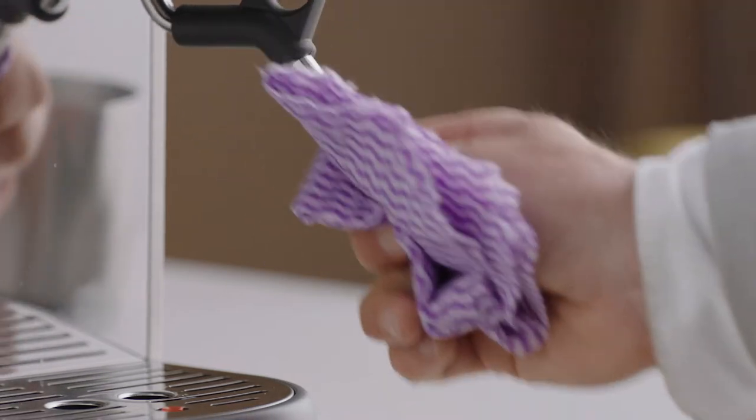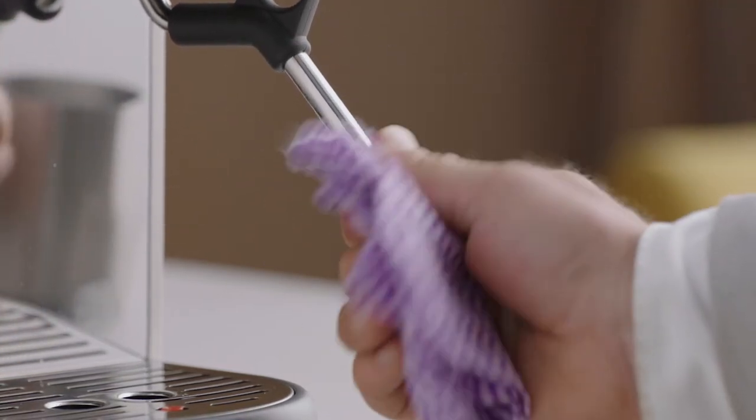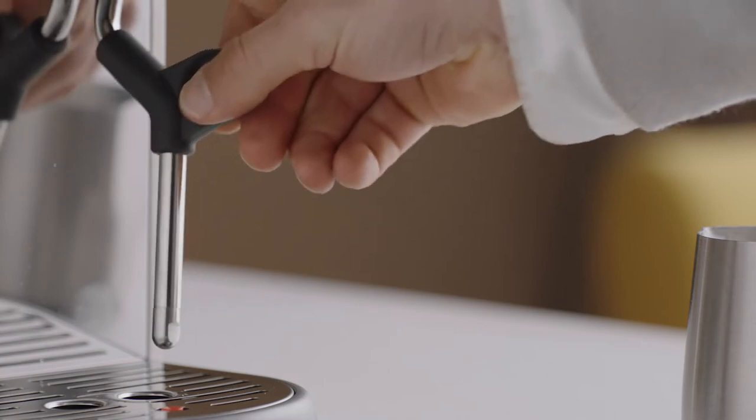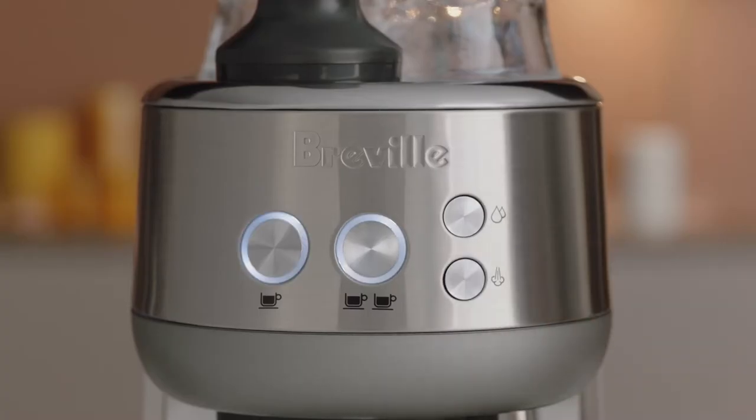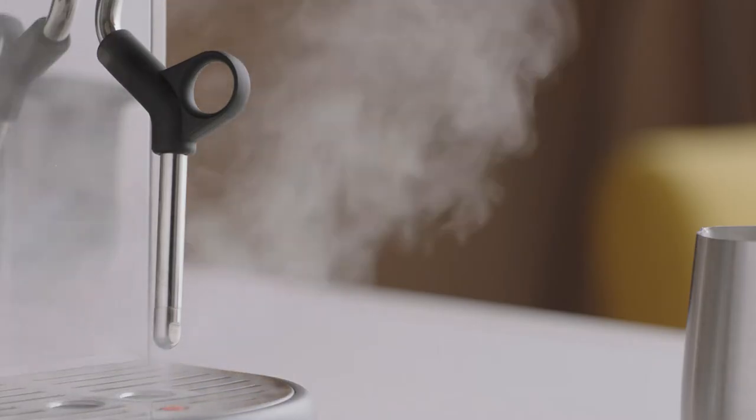To clean the steam wand after using it, wipe it down thoroughly with a damp cloth. Push the wand towards the drip tray and press the steam button to purge any residual milk.